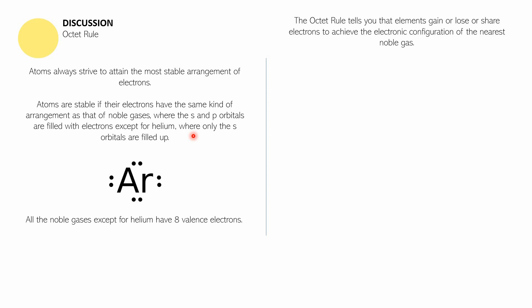The Octet Rule tells you that elements gain, lose, or share electrons to achieve the electronic configuration of the nearest noble gas. When an element gains or loses electrons, it is involved in ionic bonding. Whereas if an element shares electrons to achieve the electronic configuration of the nearest noble gas, that element is involved in a covalent bond, which can either be polar or non-polar.